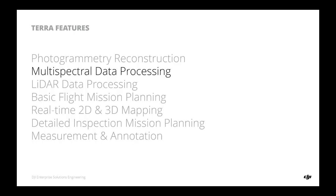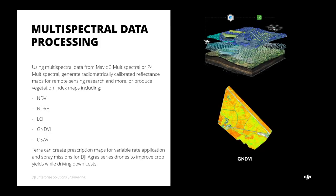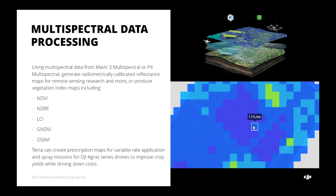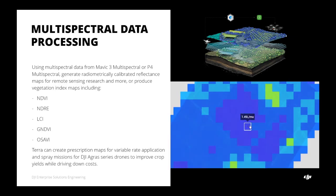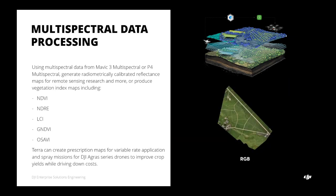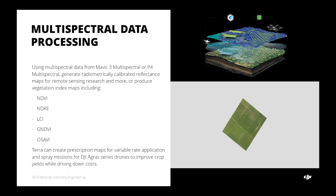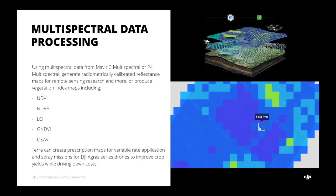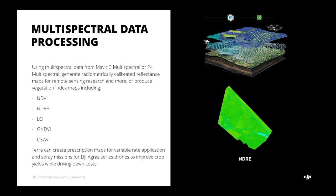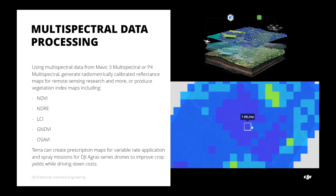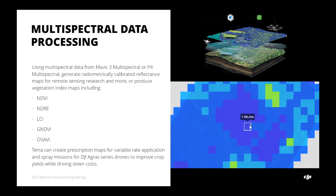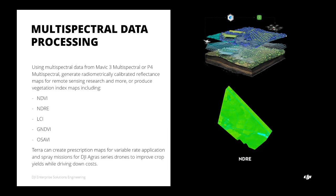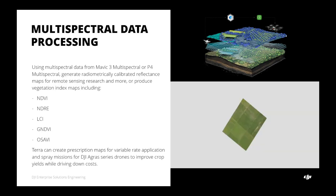Next we have multispectral data processing, which is available for data collected from the Mavic 3 Multispectral or P4 Multispectral drones. DJI Terra can process photogrammetry data along with multispectral index maps — NDVI, NDRE, LCI, GNDVI, and OSAVI — which can be easily generated using DJI Terra. Additionally, DJI Terra software combined with Agras-series drones can output chemical spray prescription maps for Agras spraying drones to perform spraying missions based on crop health.